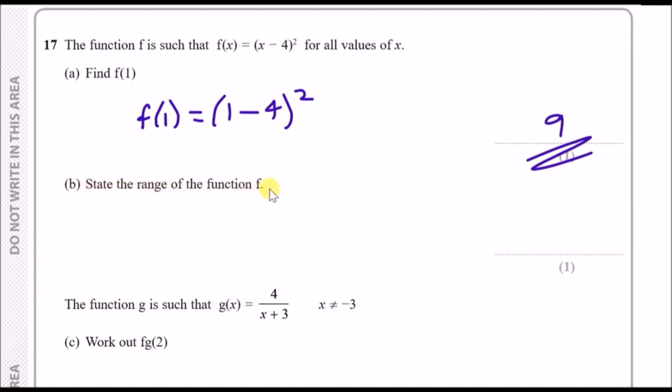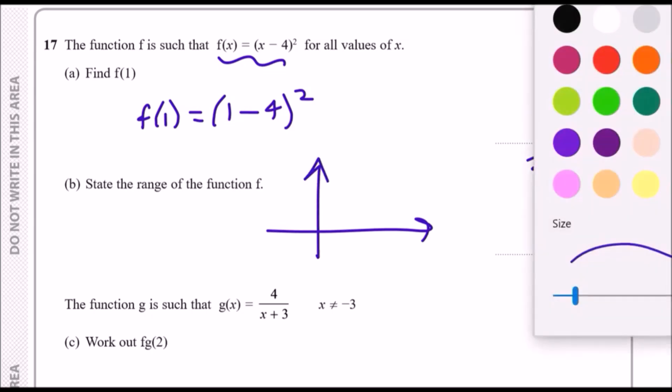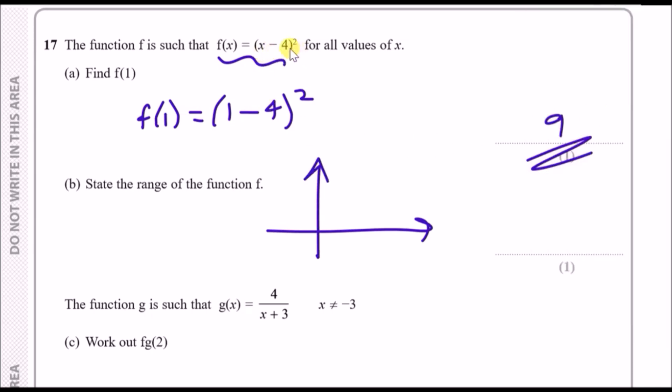Part b, state the range of the function f. To find the range, they want us to see how the graph looks like and see what values of y it takes. Because the function is (x minus 4) squared, this means it hits at x equals 4 twice. If it hits at some curve twice, it means it bounces. This is going to be a quadratic bouncing off at x equals 4. The lowest value on the y-axis is 0 and the highest is infinity. So the range of f(x) is greater than or equal to 0.